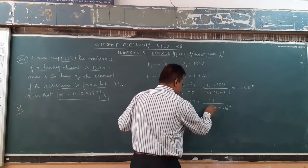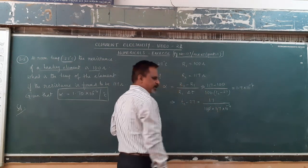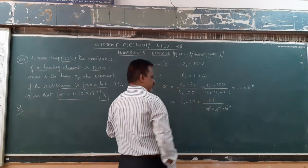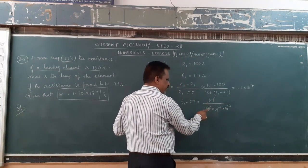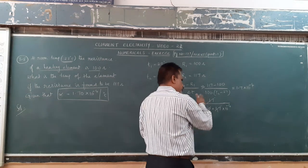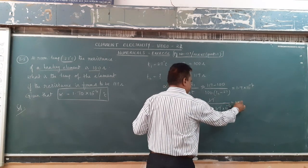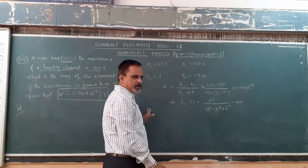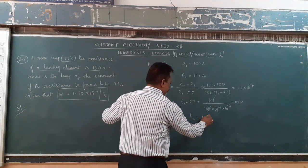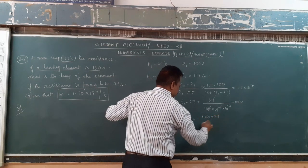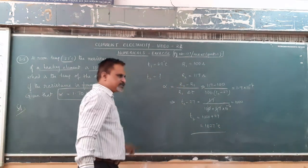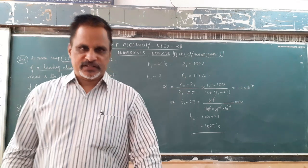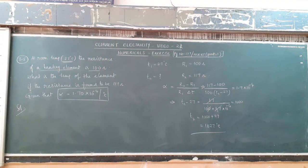10⁻⁴ × 10¹ gives 10⁻³, which goes to the numerator as 10³, which is 1000. Therefore, T2 = 1000 + 27 = 1027 degrees Celsius. I hope it is clear, children. It is a simple numerical. This is the way we find the temperature.